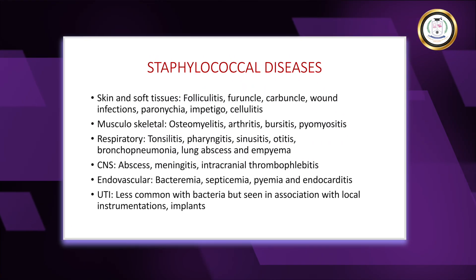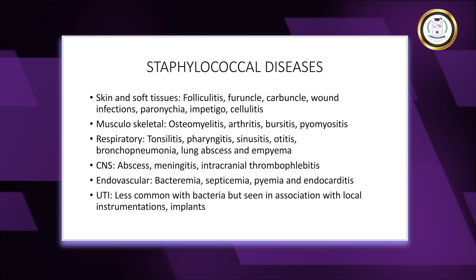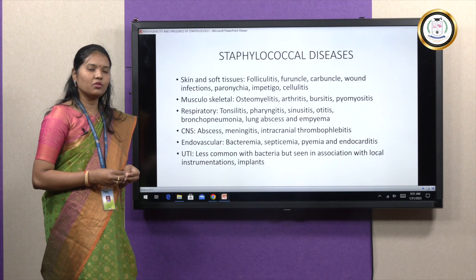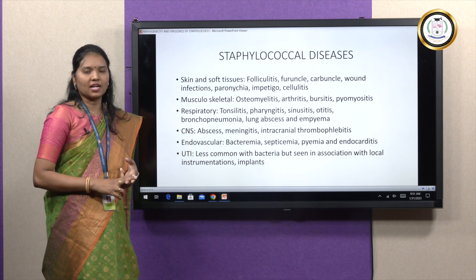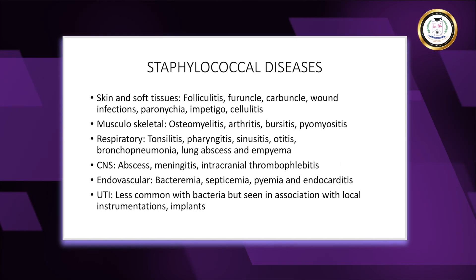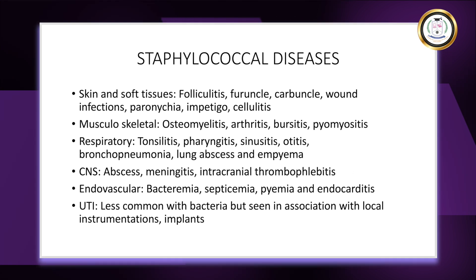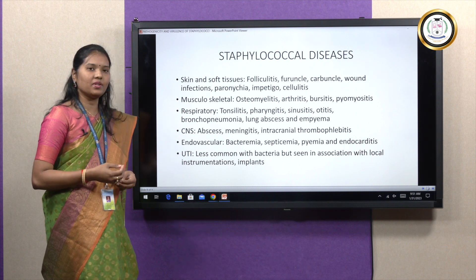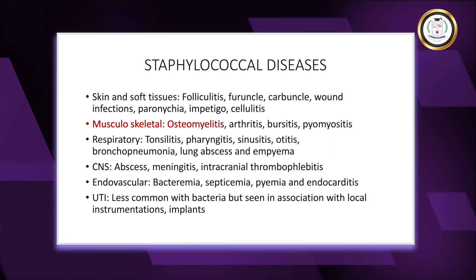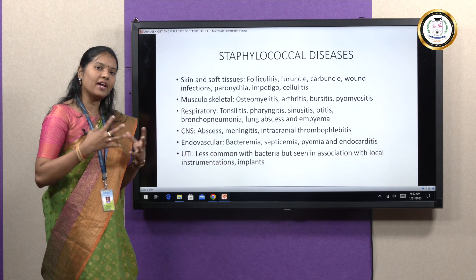Staphylococci cause diseases to different organ systems. Skin and soft tissue infections include folliculitis (inflammation of skin follicles), furuncles and carbuncles (boils), wound infections, paronychia (infections of the nails), impetigo (red sores on the face of infants), and cellulitis. Musculoskeletal infections include osteomyelitis (infection of the bones), arthritis, bursitis (infection of the bursa), and pyomyositis — inflammation of the muscles causing pyogenic lesions.